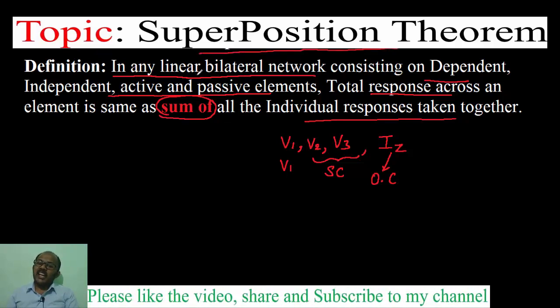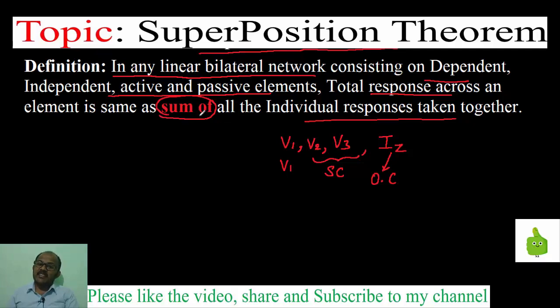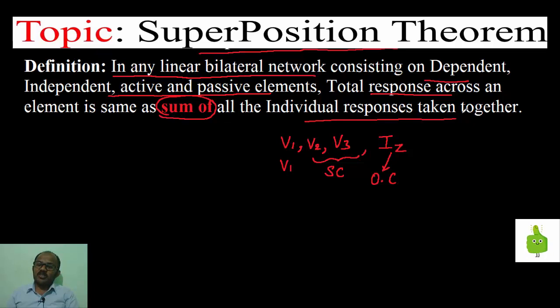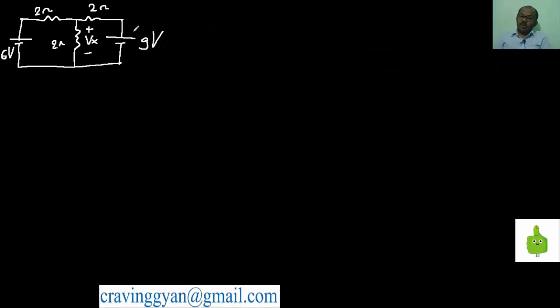Once again: in a linear bilateral network consisting of dependent, independent, active and passive elements, the total response across an element is the same as the sum of individual responses taken together. In order to understand superposition theorem thoroughly, let us solve a problem.